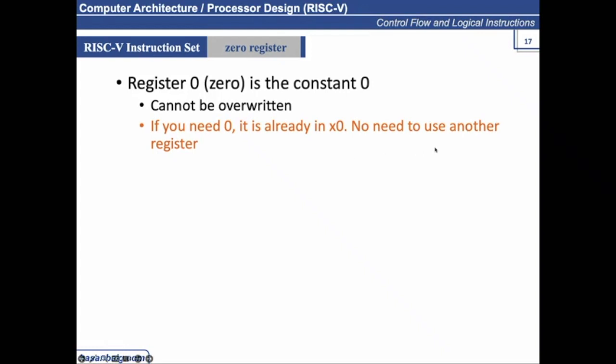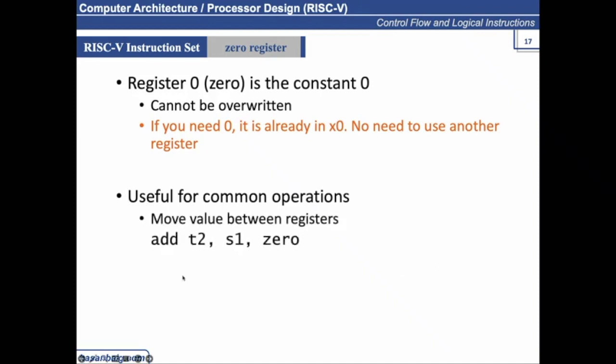You will get to see the significance of having zero. No need to use any other register. It is usually used for common operations. For example, if you have to move value between registers, moving a value between registers means add T2, S1, and zero.